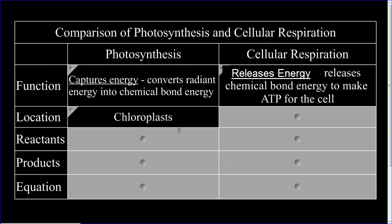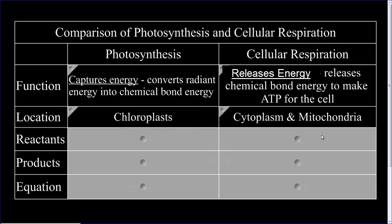Photosynthesis takes place in special organelles called chloroplasts, while cellular respiration starts in the cytoplasm and then takes place in mitochondria.